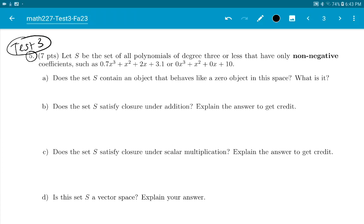Okay, test three, number five. Let's do this one. Somebody asked about part C, but let's just do all of it. S is all polynomials of degree three or less with non-negative coefficients. That means anything like zero or positive.